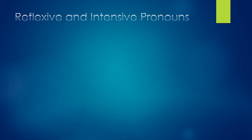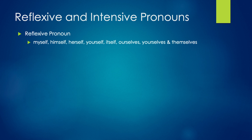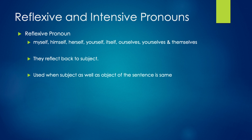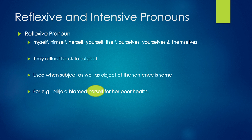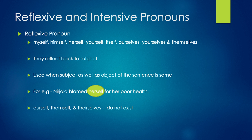Now let us move on to reflexive pronouns. These are the only reflexive pronouns in English grammar. They are called reflexive pronouns because they reflect back to the subject of the sentence. Reflexive pronouns are used when the subject and the object of the sentence are the same. For example, 'Nirjala blamed herself for her poor health' — she blamed herself. Here both subject and object are the same, so we use 'herself,' which is a reflexive pronoun. Note that words like 'ourself,' 'themself,' and 'theirselves' are prohibited because they do not exist in English grammar.